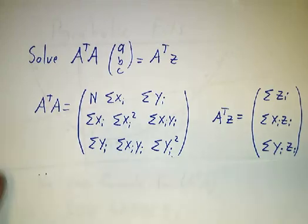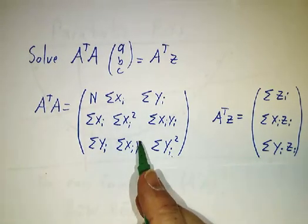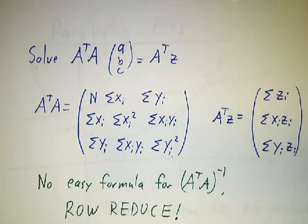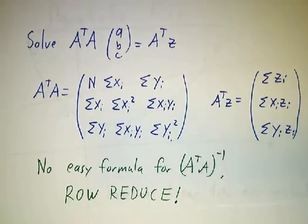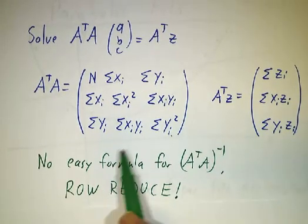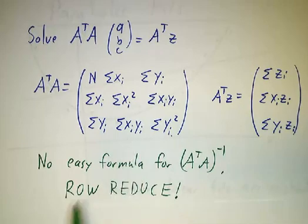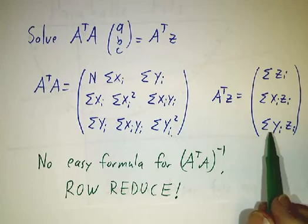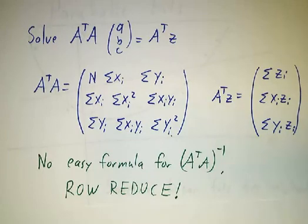When we did linear regression, we wound up with a 2x2 matrix and used the formula for the inverse of a 2x2 matrix. There is a formula for the inverse of a 3x3 matrix, but it's really ugly. Whenever dealing with problems that are 3x3 or bigger, it's almost always better to just take your 3x3 system and row reduce it, rather than try to look for a formula.